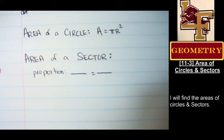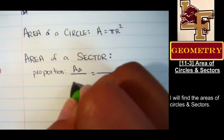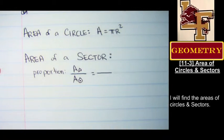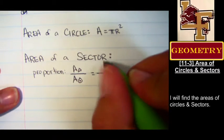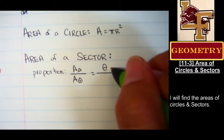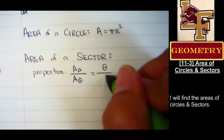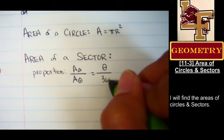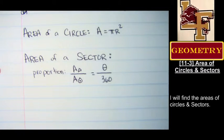That is one fraction equals some other fraction. Where one of the fractions talks about the areas of things. Comparing the area of the sector to the area of the circle. So the area of the piece divided by the area of the whole. And on the other side, we can compare the measure of the central angle that's creating that slice to the angle measure of the entire circle.